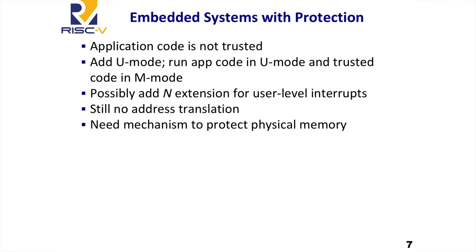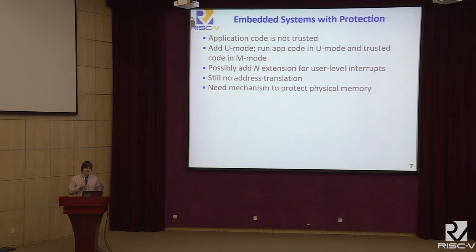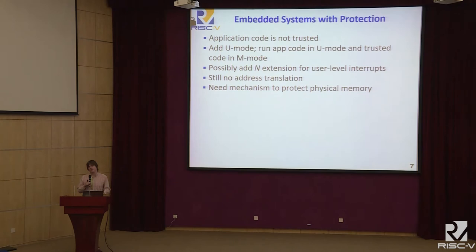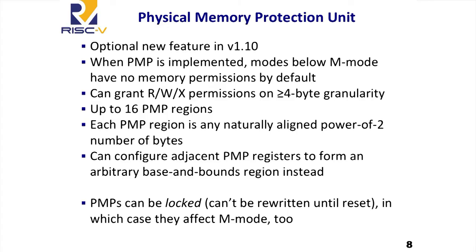That's not sufficient for all kinds of systems. Even in some embedded systems, you want to support multiple processes with isolation between them and the trusted code. To do that, you provide user mode — run application code in user mode and trusted code in machine mode. You might also provide the N ISA extension for user-level interrupts, which extends the machine and supervisor interrupt scheme down to user mode so you can take interrupts without going back through privileged code, improving performance and simplifying software development for some embedded systems. In a scheme with machine and user mode there's still no address translation, but you need some sort of memory protection mechanism — otherwise user code could access memory owned by machine mode, defeating the purpose of isolation.